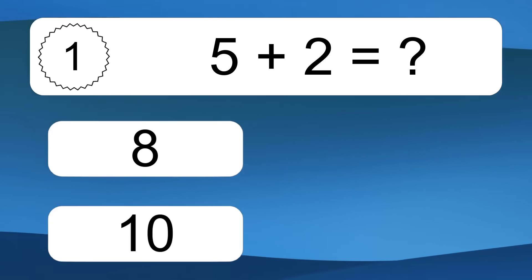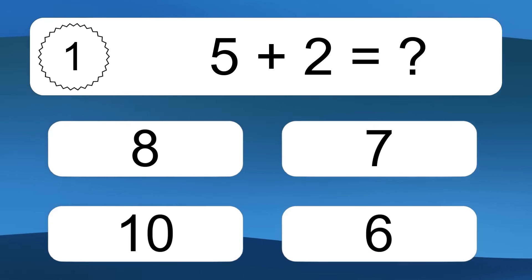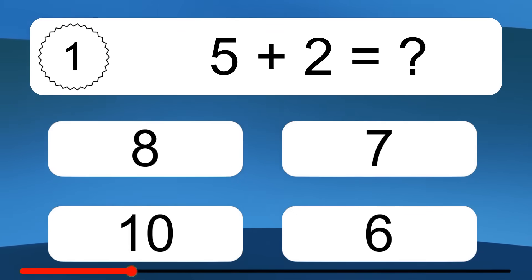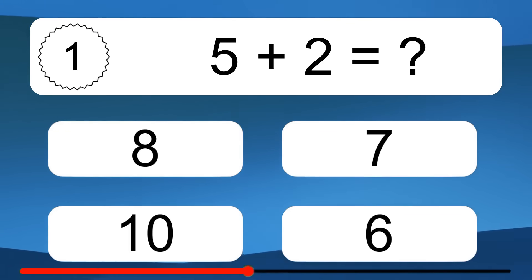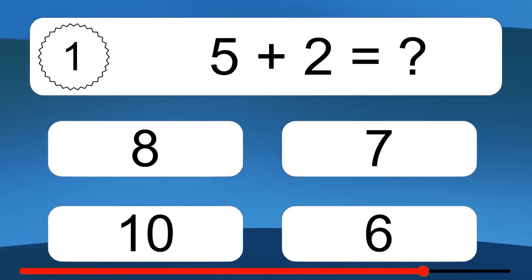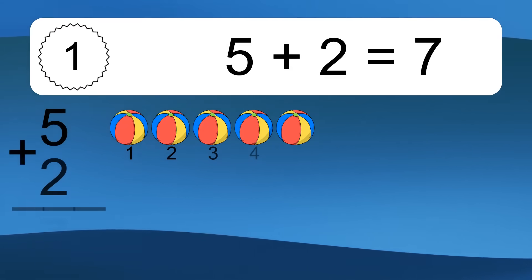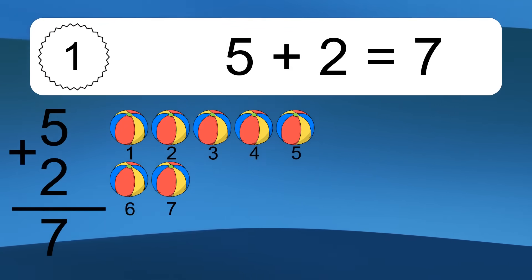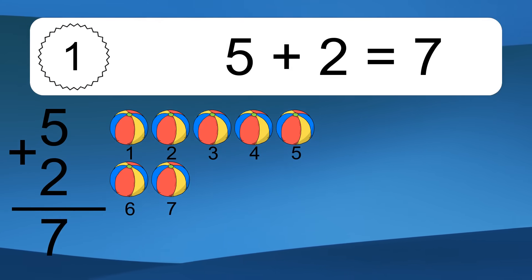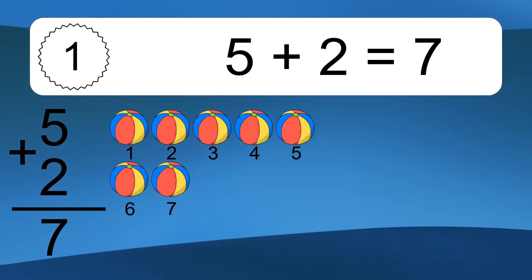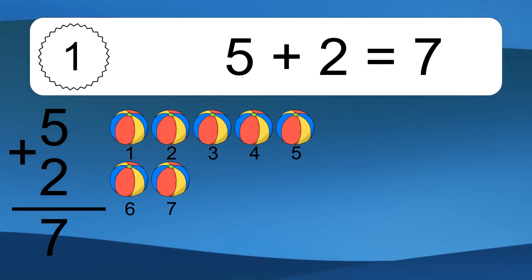5 plus 2 equals what? 5 plus 2 equals 7. Let's count it: 1, 2, 3, 4, 5, 6, 7.